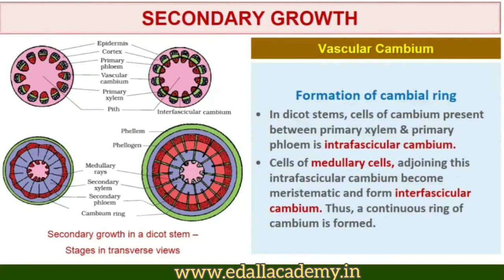The cells of cambium present between primary xylem and primary phloem form the intrafascicular cambium. The cells of medullary rays adjoining these intrafascicular cambium become meristematic and form the interfascicular cambium. Thus, a continuous ring of cambium is formed.